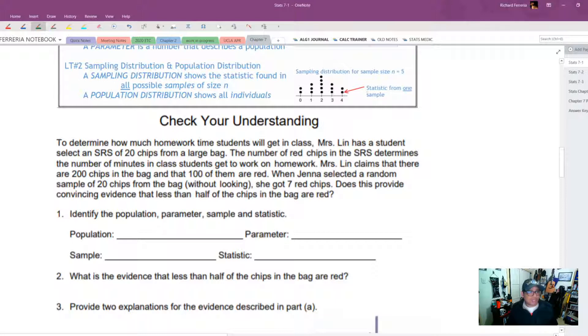Let's check your understanding. To determine how much homework time students will get in each class, Mr. Lin has a student select an SRS of 20 chips from a large bag. The number of red chips in the SRS determines the number of minutes in class students get to work on homework. Mrs. Lin claims that there are 200 chips in the bag and 100 of them are red. When Jenna selected a random sample of 20 chips from her bag without looking, she got 7 red chips. Does this provide evidence that less than half of the chips in the bag are red?